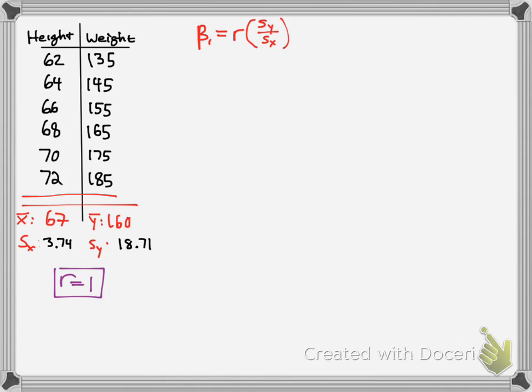Now we still want to find the equation of the line, so let's find the equation here. This would be the slope equation. So you simply plug in those numbers, 1 times 18.71 over 3.74 and you get beta1 equal to 5. Now that's slope.